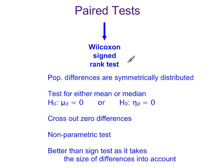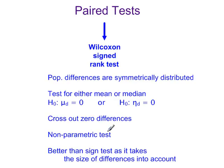The Wilcoxon signed rank test assumes the population differences are symmetrically distributed. We can test either the mean or the median, so H0 could be in terms of the population mean difference or the population median difference. Any zero differences are crossed out. It's a non-parametric test and it's better than the sign test as it takes the size of the differences into account.